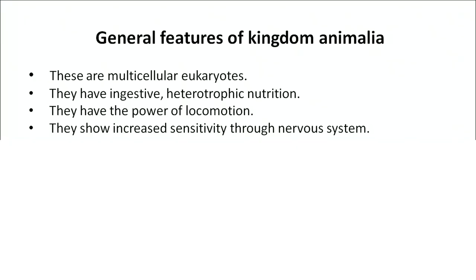Animals are multicellular eukaryotes; that is, they contain a nucleus and organelles and are enclosed by a plasma membrane. They have ingestive, that is heterotrophic, nutrition — the process of absorbing nutrients. They have the power of locomotion and show increased sensitivity through nervous systems.